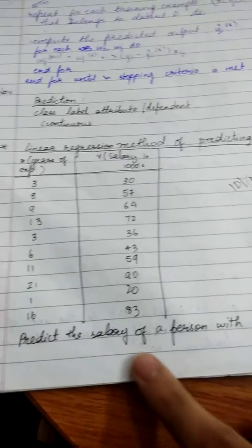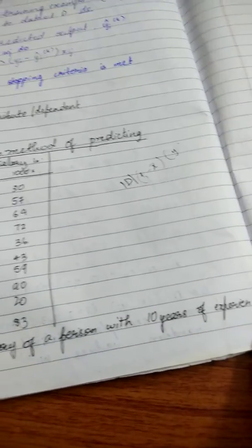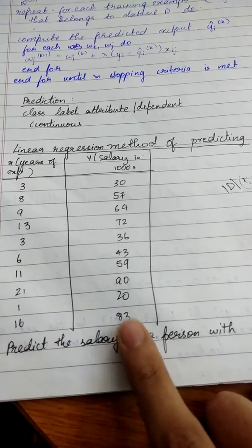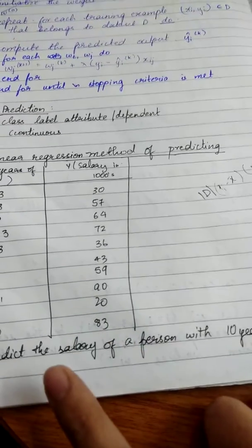The question says predict the salary of a person with 10 years of experience. So 10 years comes under X, the predictor variable, and we need to find the corresponding Y value for X equals 10.